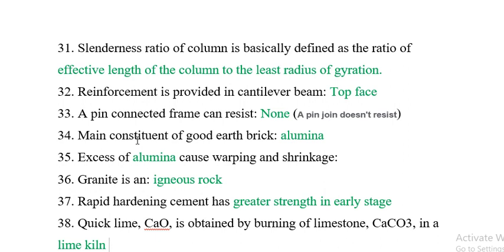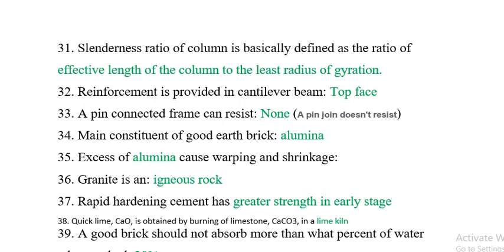Question 36: Garnet is found in igneous rock. Question 37: Rapid hardening cement has greater strength in the early stage. Question 38: Quick lime is obtained by burning limestone (calcium carbonate) in a lime kiln.